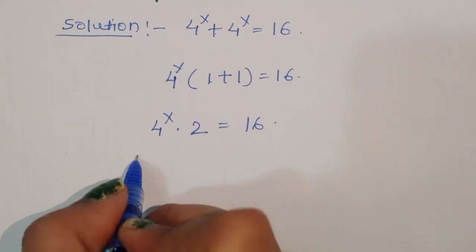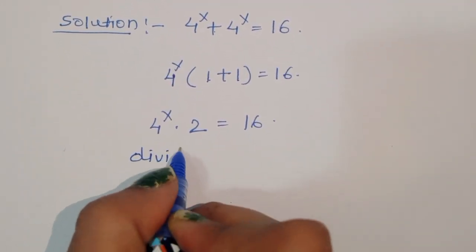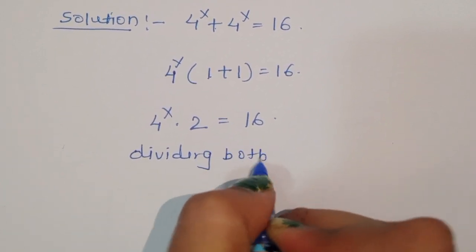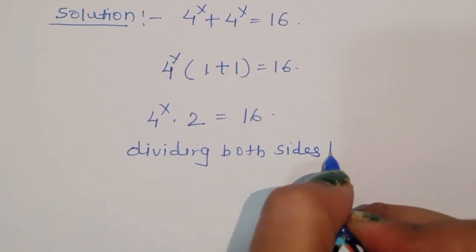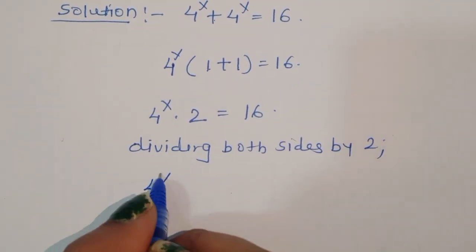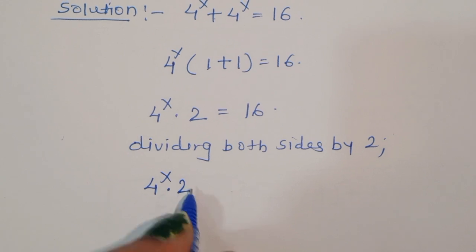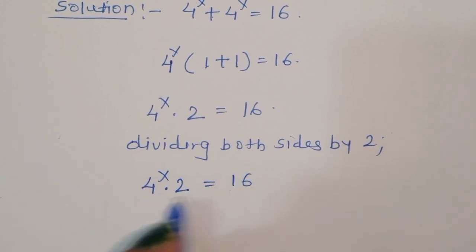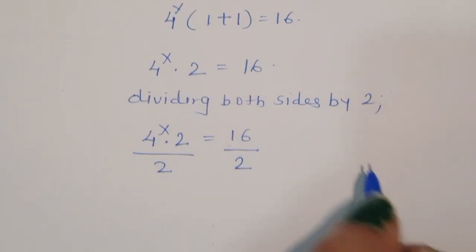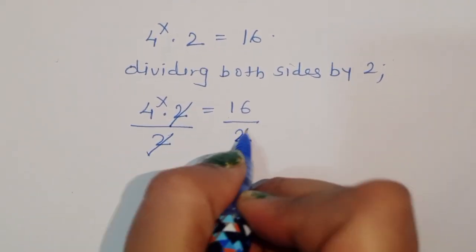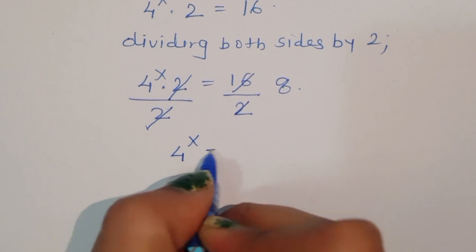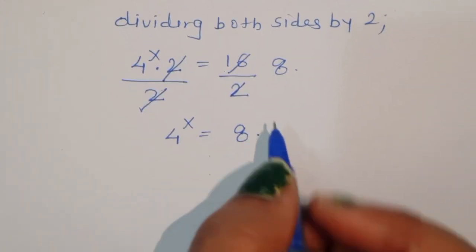Now, dividing both sides by 2, the 2 cancels from the left side and 16 divided by 2 gives 8. So, 4 power x is equal to 8.